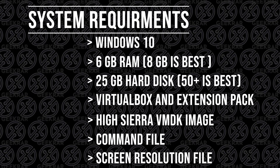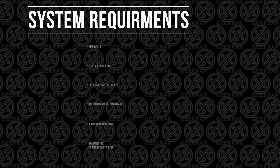I'm going to go over the system requirements so you get a better understanding of what you need to get this up and running. This will run on lower spec PCs. You're going to need Windows 10, a minimum of 6 gigs of RAM — 8 is going to be better. You only need about 25 gigs of hard disk space, 50 is going to do you better. You'll need to download VirtualBox and the extension pack, the High Sierra VMDK file, the command file, and a resolution file.